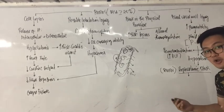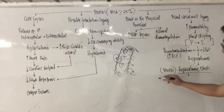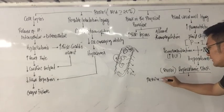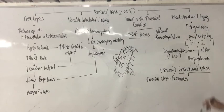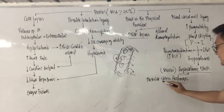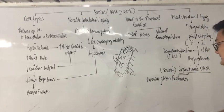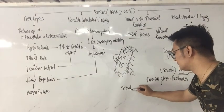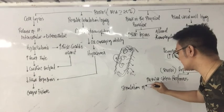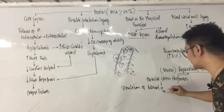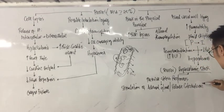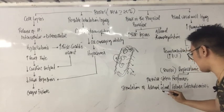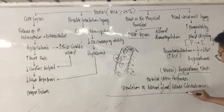A patient with hypovolemic shock or burn shock requires the body to compensate. During hypovolemic shock, there will be a massive stress response, which results in stimulation of the adrenal gland and release of catecholamines — epinephrine and norepinephrine.